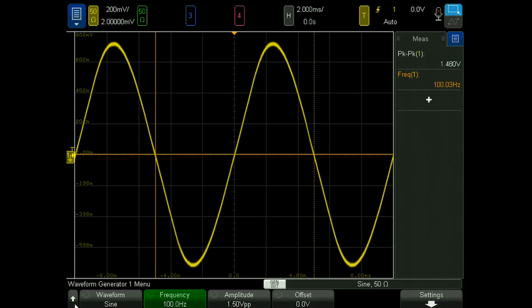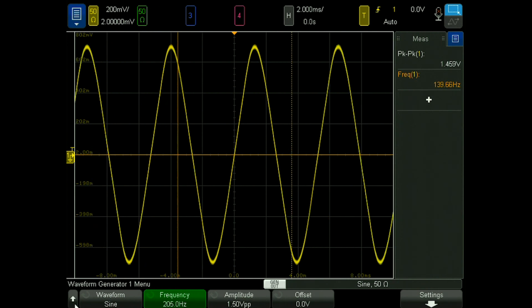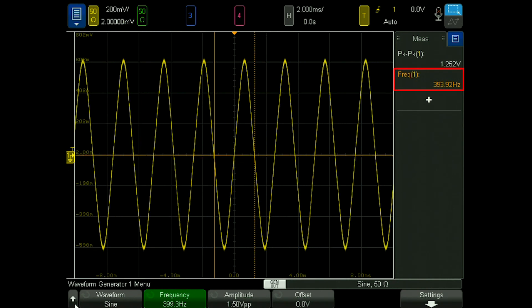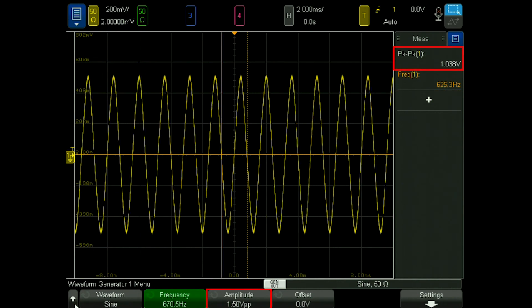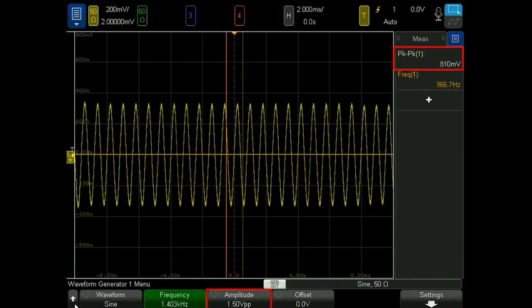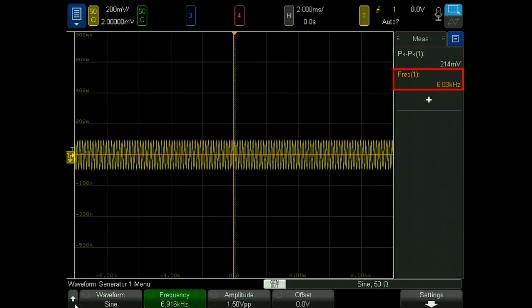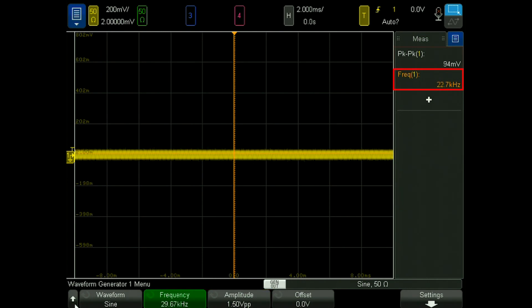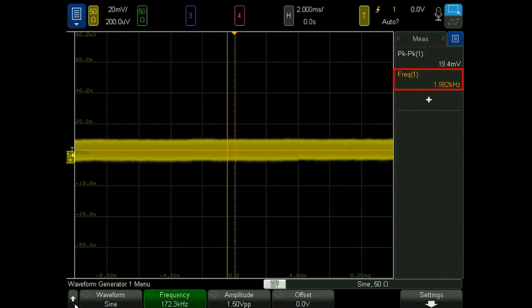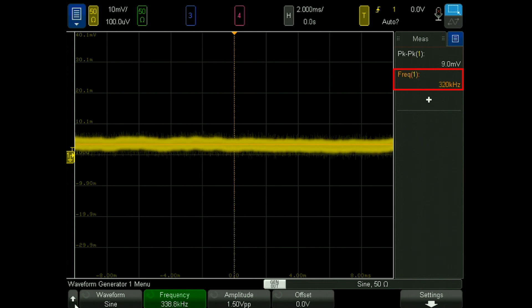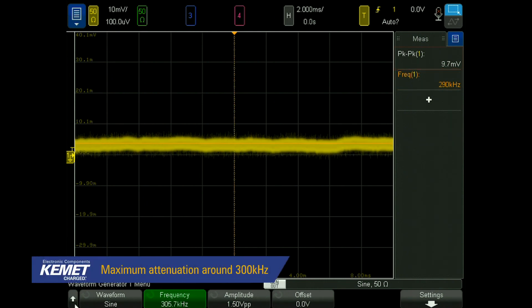So let's start with sweeping the frequency. We can see that the frequency never exceeds 1.5 volts coming out of the choke, and it's attenuating the signal with increasing frequency. We see the maximum attenuation at around 300 kilohertz.